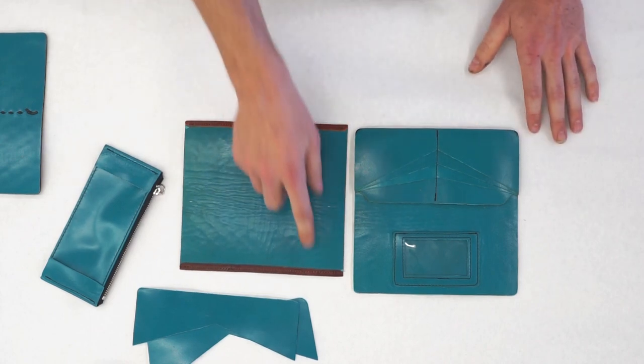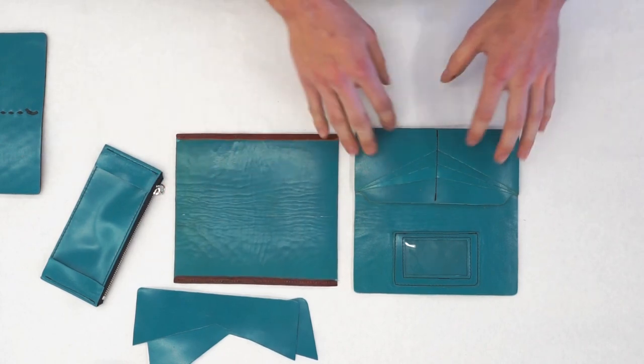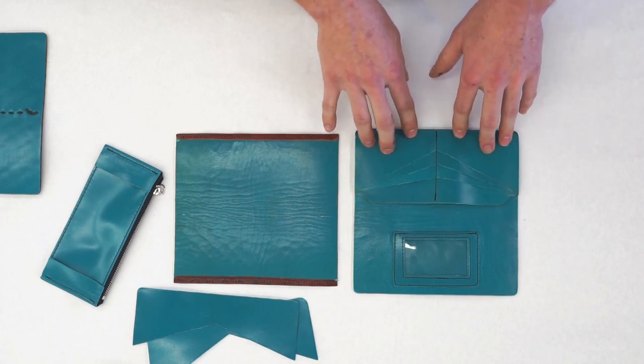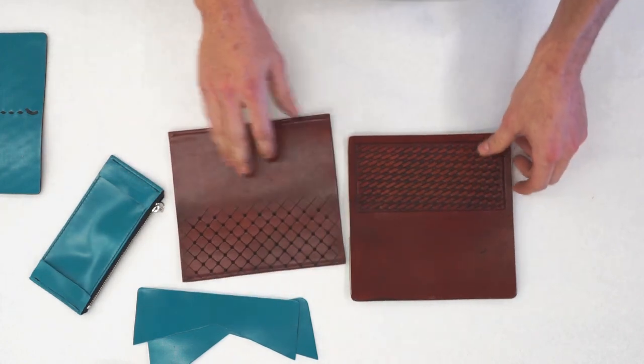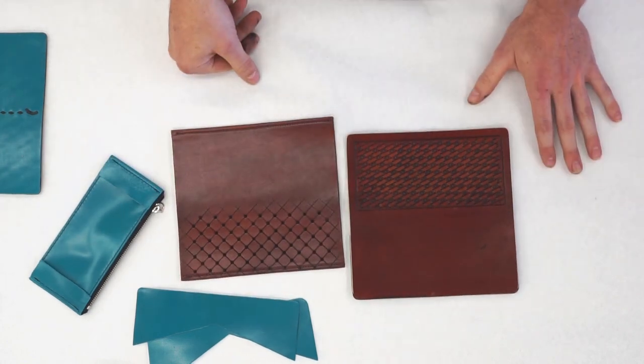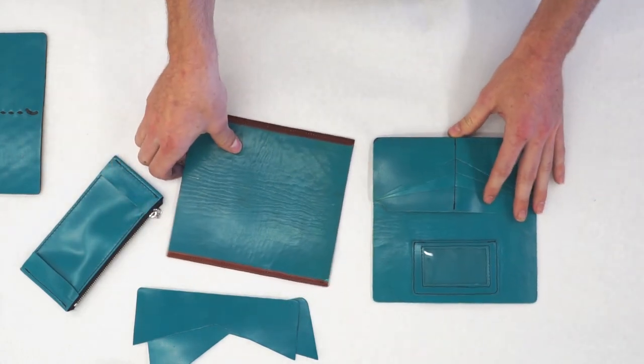So I've got my edges rolled and sewed down on this back, I've got my pocket assembly glued down with the ID window piece, and both of my backs are tooled and finished however I want. So we're ready to move on to the next steps.